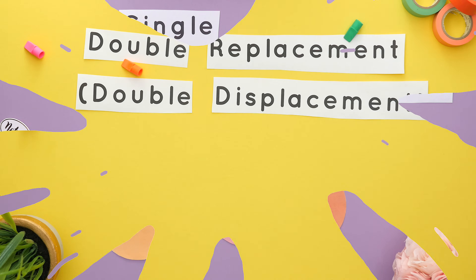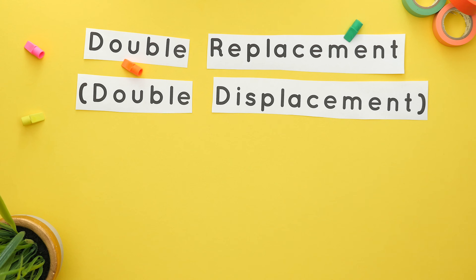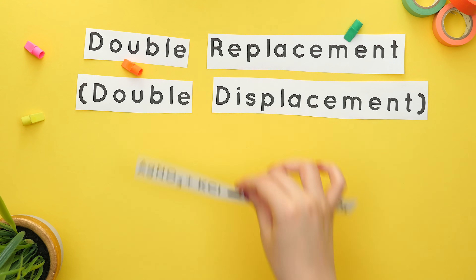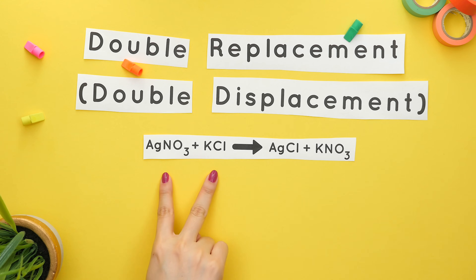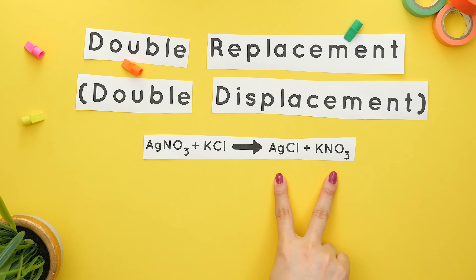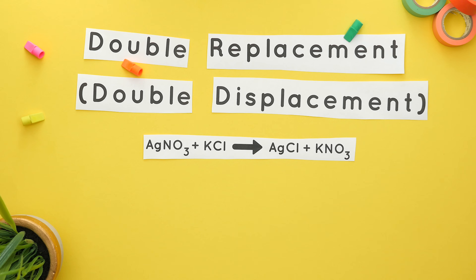A double replacement or double displacement reaction is really similar to this, because our reactants are now two compounds and those form two different compounds. Think of it this way.